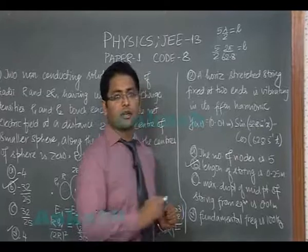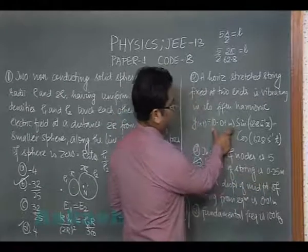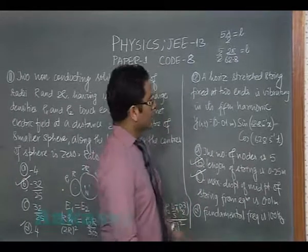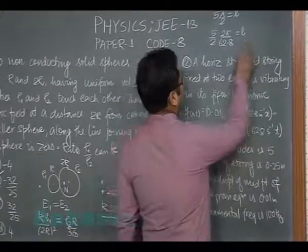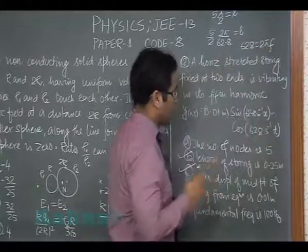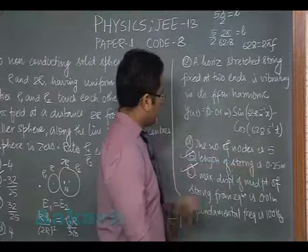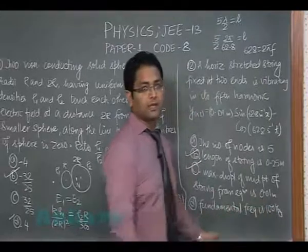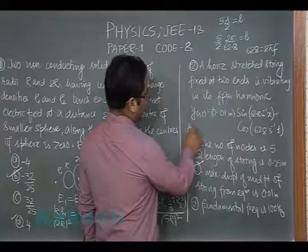the midpoint of the string would be anti-node and the maximum displacement would be the same thing, so quite obviously that is 0.01 meter. It is in the fifth harmonic so this frequency is corresponding to fifth harmonic. If I put 628 equals to 2 pi f, I'm going to get f as 100 hertz, but this is the frequency corresponding to fifth, and the fourth option says the same hundred hertz is the fundamental frequency which would obviously be incorrect. So the correct answer would be option number B and option number C.